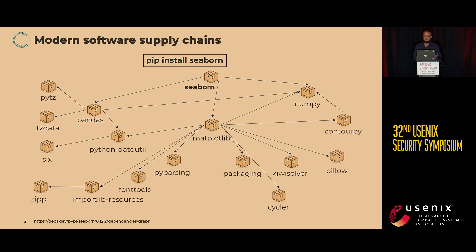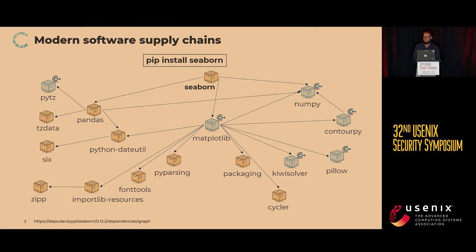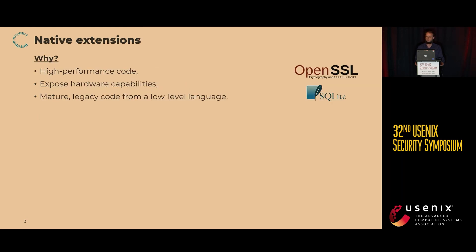There are a lot of dependencies coming when you download one package. The security community has looked at problems related to these dependencies, like injection problems or use-after-free vulnerabilities. But one thing that was previously neglected is the amount of C and C++ code present in these dependencies, which can be invoked via a mechanism called native extensions that enable the use of this low-level code inside the scripting language.